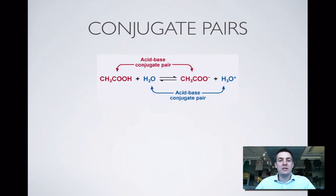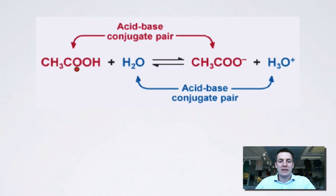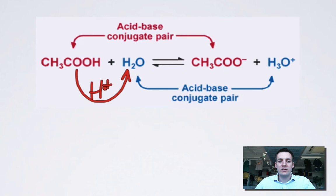Let's have a look at what it means for chemical reactions, and also introduce the concept of conjugate pairs. Here we've got ethanoic acid reacting with water, and in the process it's acting as an acid — according to our new definition, it is giving H-plus to water. In the process it loses an H and loses some positive charge, so it becomes negative. The water picks up that H-plus, so it's accepting H-plus, so it's acting as a base, and it turns into something with more H and more positive charge.